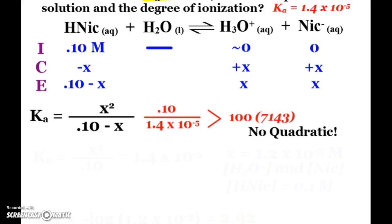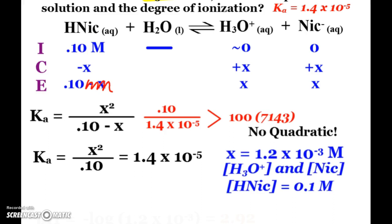And what that helps us so much with is it says we just ignore this minus X. Because whatever X turns out to be, 0.1 minus it is going to end up being 0.1 with our sig figs. So now we just have Ka equals X squared over 0.1. Plug and chug, solve for X. X is going to be 1.2 times 10 to the negative third molar. So X takes care of hydronium concentration and my nicotinate ion concentration. And my HNIC is simply just going to stay at 0.1 molar.